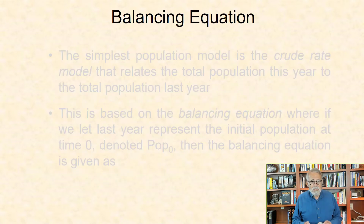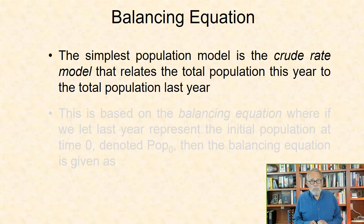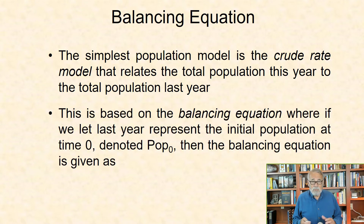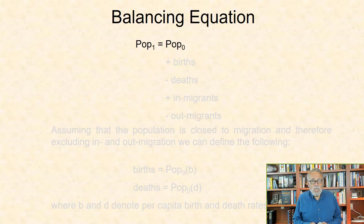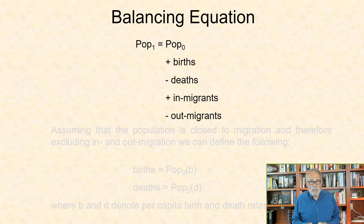Balancing equation. The simplest population model is the crude rate model that relates the total population this year to the total population last year. This is based on the balancing equation, where if we let last year represent the initial population at time 0, denoted population 0, then the balancing equation is given as population at time 1 equal to population at time 0, plus births, minus deaths, plus in-migrants, minus out-migrants.